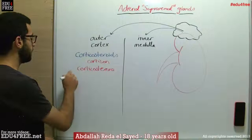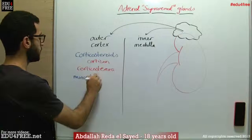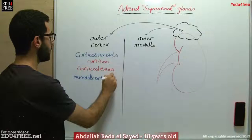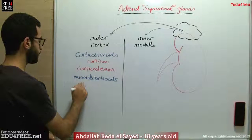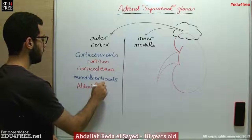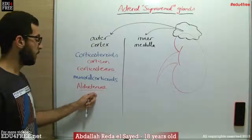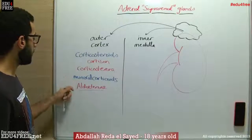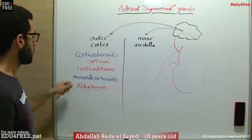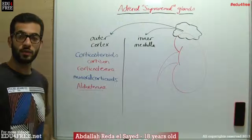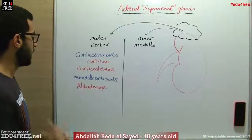Next, we have mineralocorticoids, and the most important one is aldosterone. This works on maintaining the mineral metabolism in the human body through the control of the levels of sodium and potassium inside the kidney itself. It increases the reabsorption of sodium in the kidney tubules and, on the other hand, increases the excretion of potassium outside the tubules.